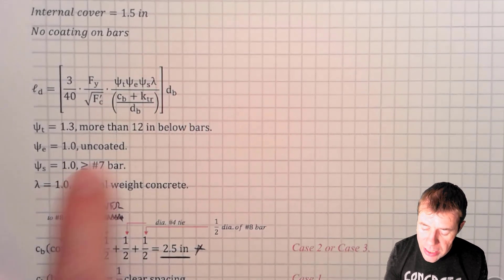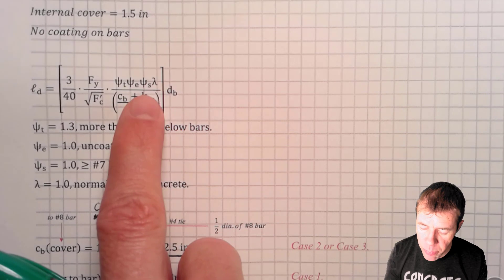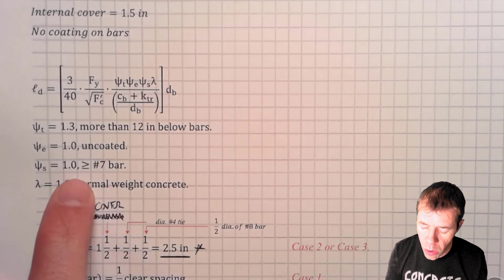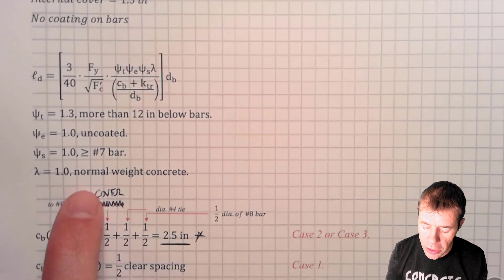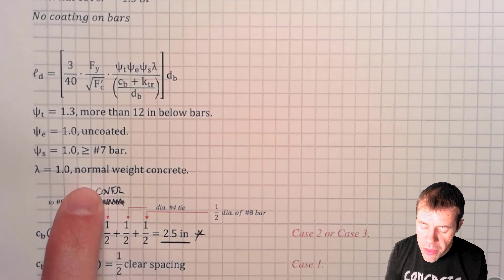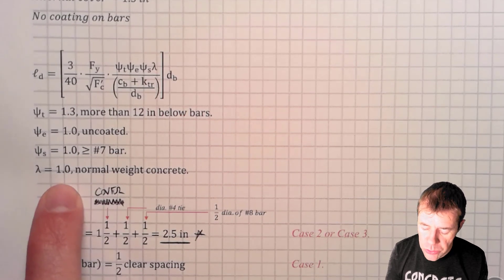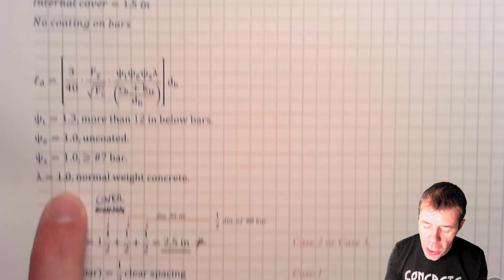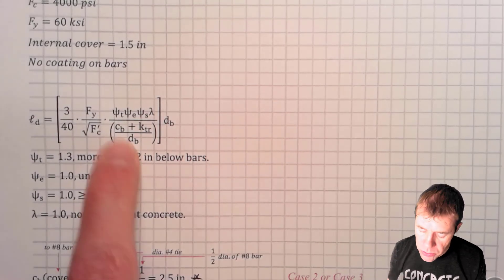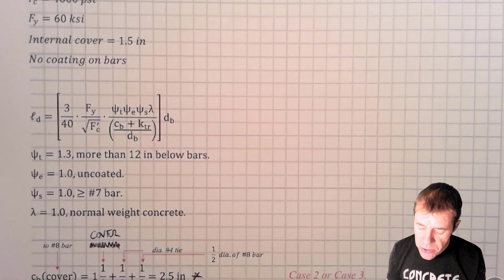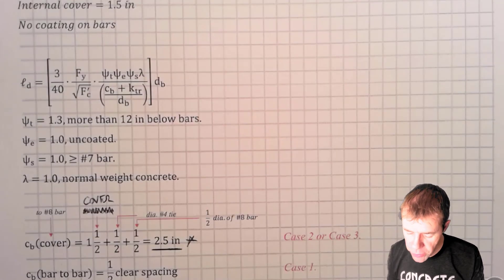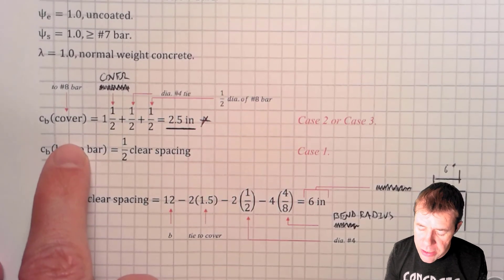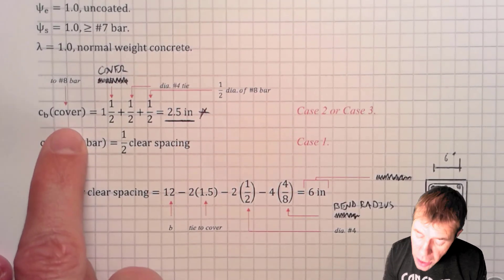My Psi-S is the bar size factor. I'm using greater than a number 7 bar, so I will be using 1. I'm using normal weight concrete, so Lambda is also 1. Now I have to start calculating my C sub B equations, which is a little bit different — I have to first find what my cover is.